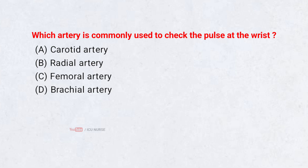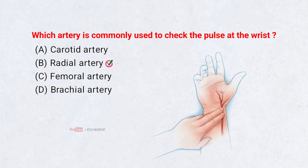Which artery is commonly used to check the pulse at the wrist? Correct answer B: Radial artery. The radial artery is easily accessible at the wrist and commonly used for pulse measurement.